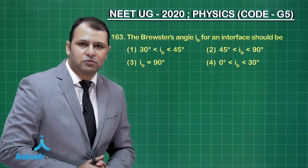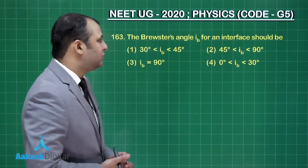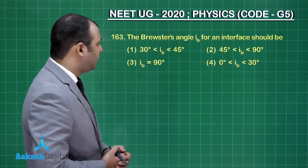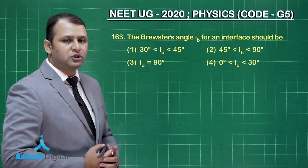Now let's take our next question, question number 163. This question belongs to chapter wave optics. Here the question is related to polarization. The Brewster's angle IB for an interface should be, and four options are possible.